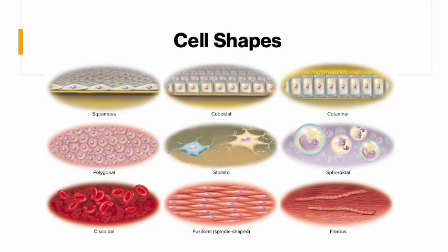Let's talk about cell shapes in more detail. We can have squamous, which are flat and scaly; cuboidal, which look like cubes; columnar, which are taller than they are wide so they look like little columns; polygonal, which are weird-shaped, typically like a polygon; stellate, which are star-shaped; spheroidal and discoidal, which are round — though disc ones usually have a pushed-in center to make them look like a disc; fusiform, which are fat in the middle and skinnier at the ends; and fibrous, which look like little threads.